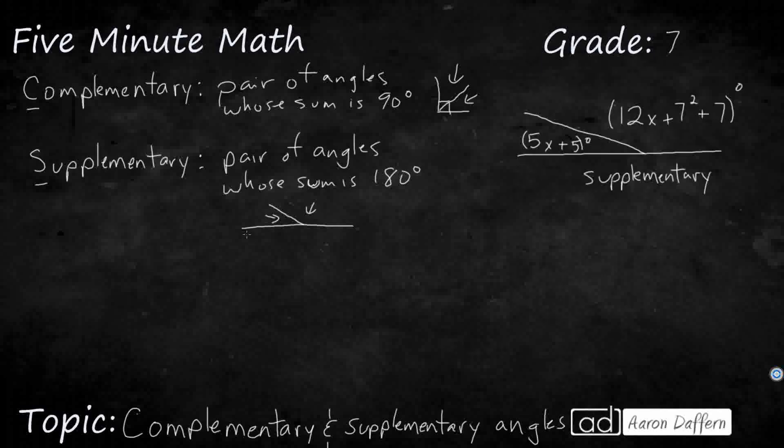We can do the same thing with supplementary angles. So we'll say this 5x plus 5, that's angle 1, plus that 12x plus 7 squared plus 7. So both of those equal together to 180. So we need to simplify these. We don't really need any of the parentheses. We do have that 7 squared, so that's going to turn into 49.